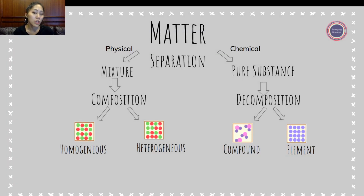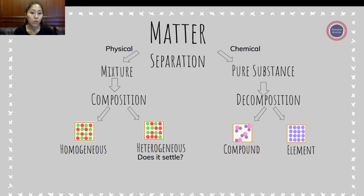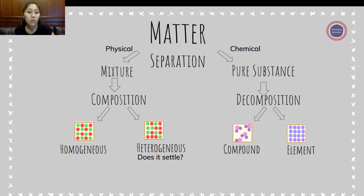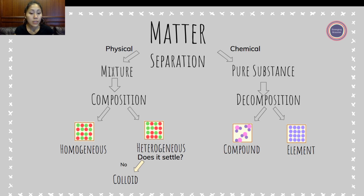Within heterogeneous mixtures, there are two different types, and the way to determine which type it is involves asking the question: does it settle? If you leave the mixture in a beaker for a while — say two hours or even a day — and you come back and check on it, does the substance settle? If it doesn't settle, this is known as a colloid. Examples of colloids are jello and lotion.